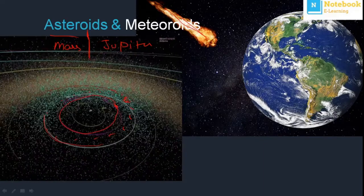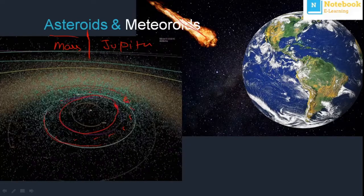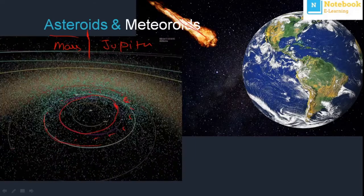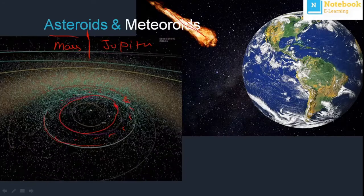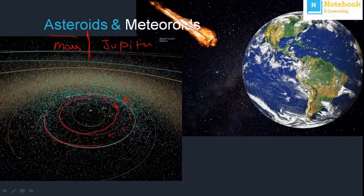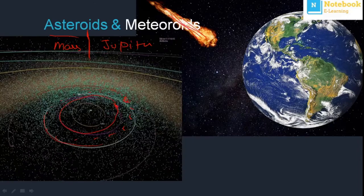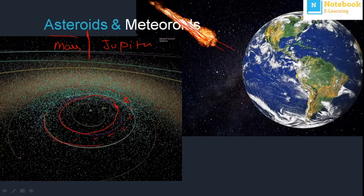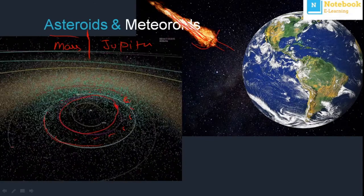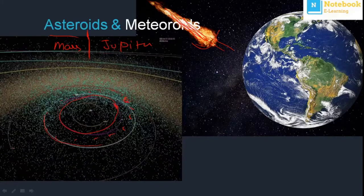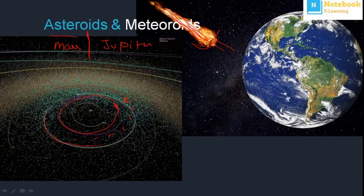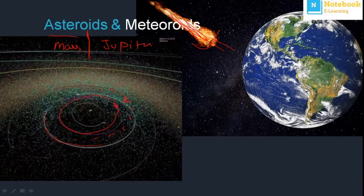Meteoroids are also small pieces of rock that move around the Sun. Sometimes they start coming towards the Earth, but the friction of our atmosphere completely burns them up so they cannot reach the Earth's surface.